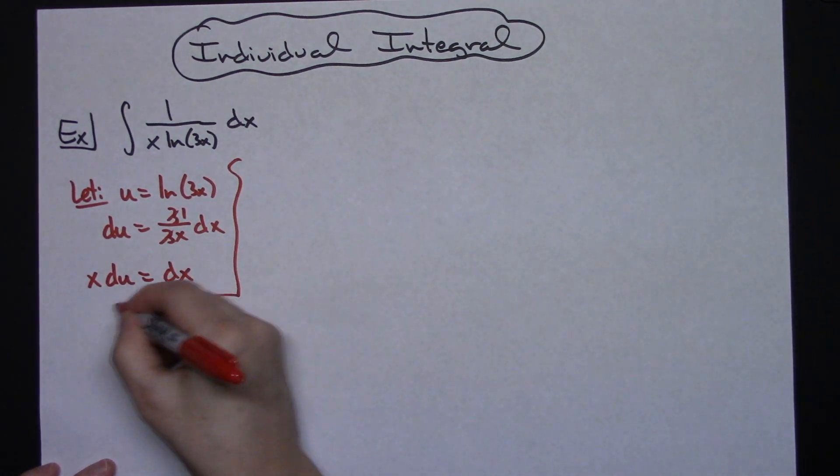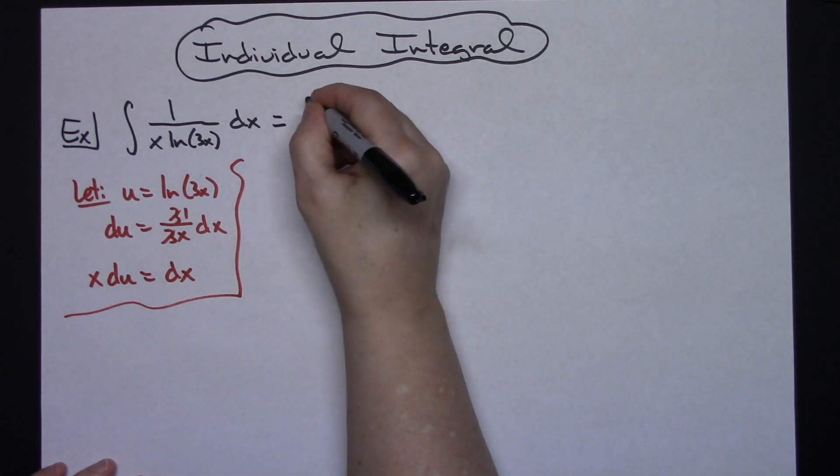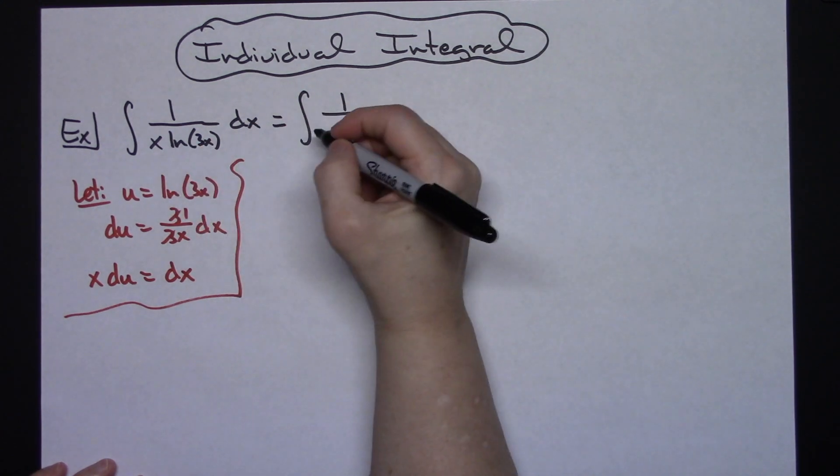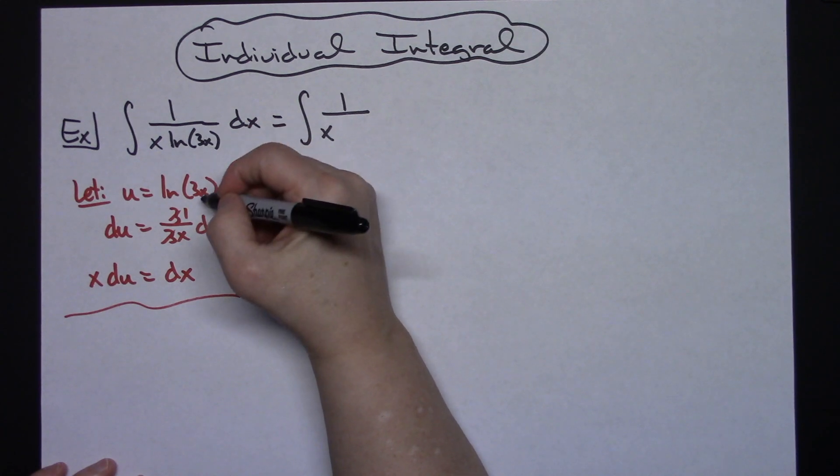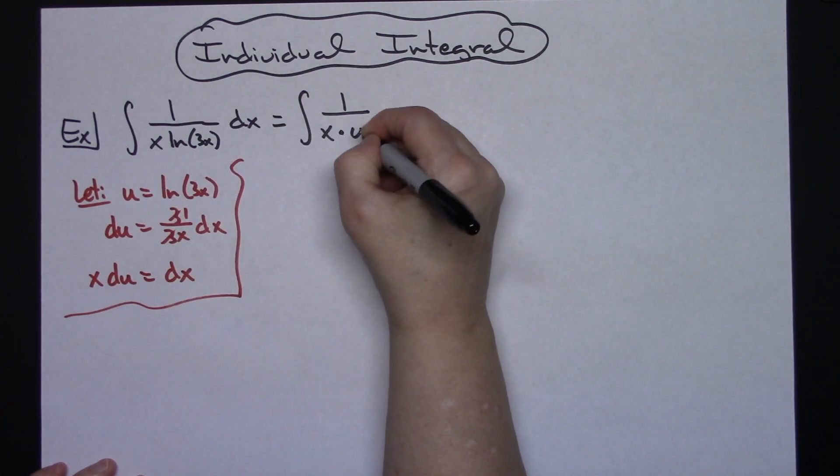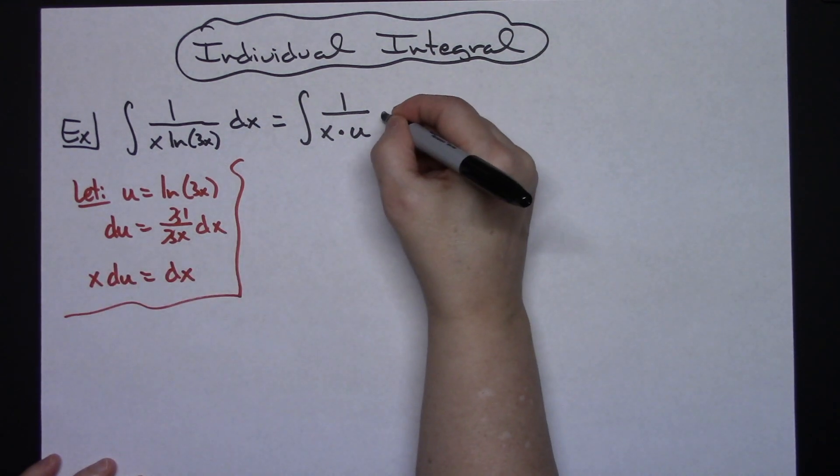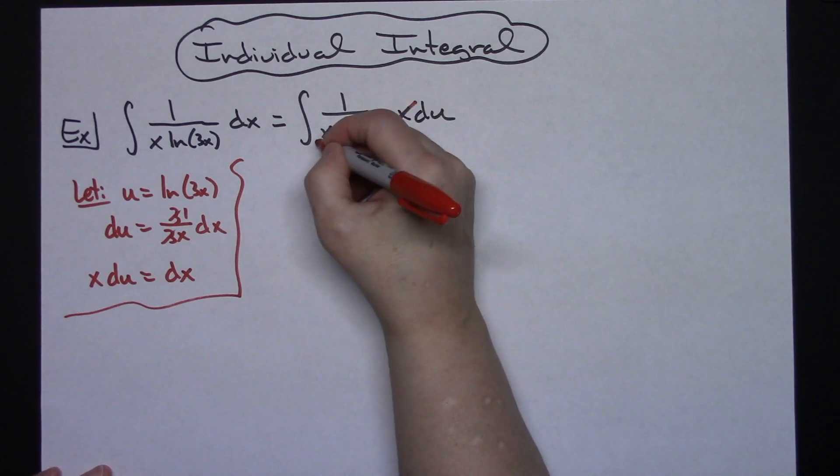I'm going to come up here to the original integral and start making some substitutions. My 1 on the top will stay put. I will have the x right there. Natural log of the 3x there is going to be replaced with a u. I'm going to replace dx with what I said it was equal to, which is x du.